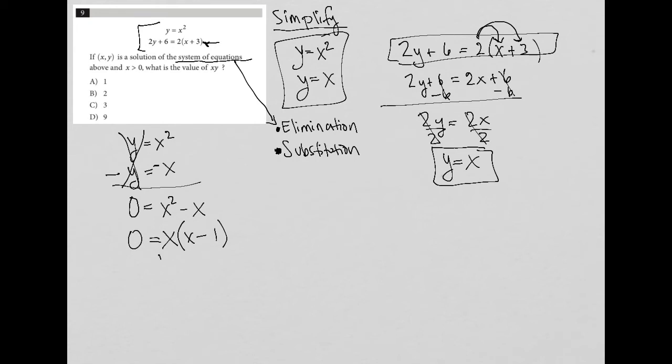Because now this is fully factored, I can set each component equal to 0 separately. So I can say well if 0 equals x times x minus 1, that means that x can equal 0. And it also means that x minus 1 could equal 0. So I have one solution for x equaling 0. And of course over here I can add 1 to both sides and be left with x equals positive 1.